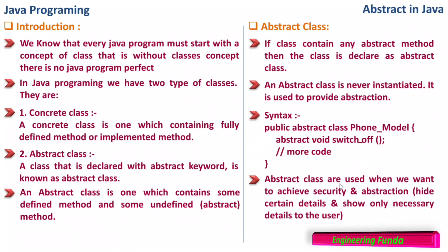Abstract classes are used when we want to achieve security and abstraction — that is, hide certain details and show only the necessary details to the user. So an abstract class is used when we want to have security.